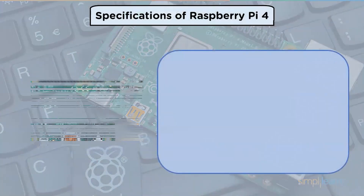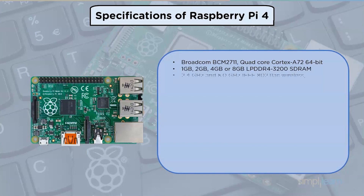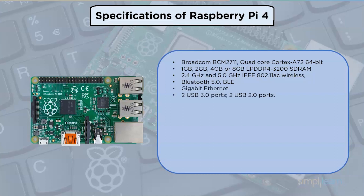Raspberry Pi 4 has a Broadcom quad-core Cortex-A72 ARM version 8, 64-bit processor. It has 1 GB, 2 GB, 4 GB, or 8 GB LPDDR4 SDRAM. It features 2.4 GHz and 5.0 GHz IEEE wireless, Bluetooth 5.0, gigabit Ethernet, 2 USB 3.0 ports, and 2 USB 2.0 ports.